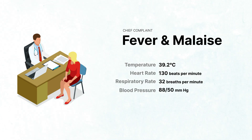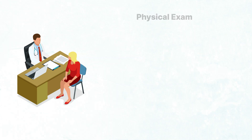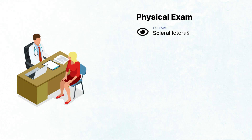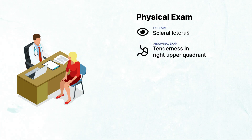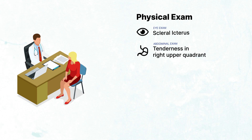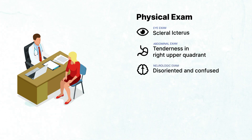Her physical exam is immediately notable for scleral icterus. Palpation of her abdomen reveals tenderness in the right upper quadrant, and furthermore, she appears disoriented and confused.